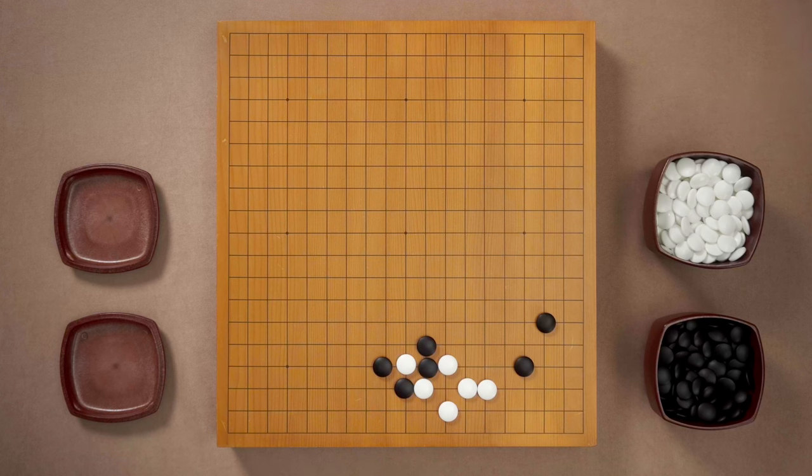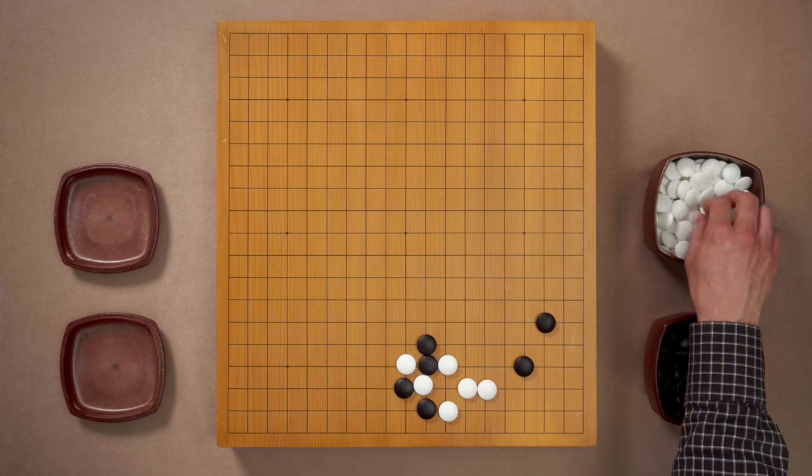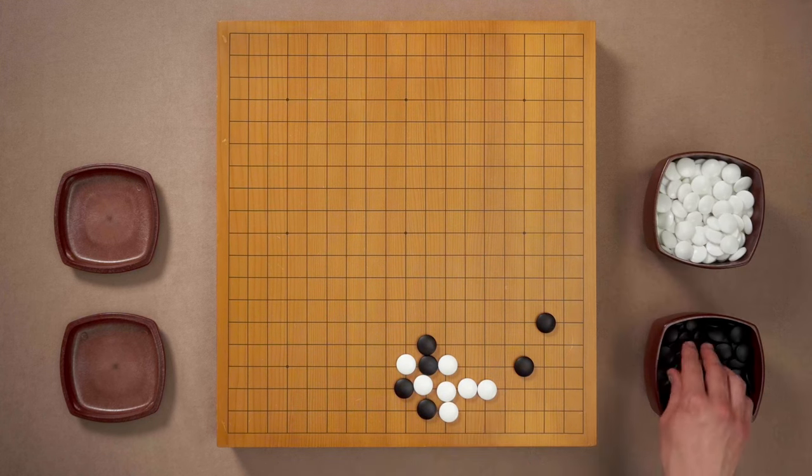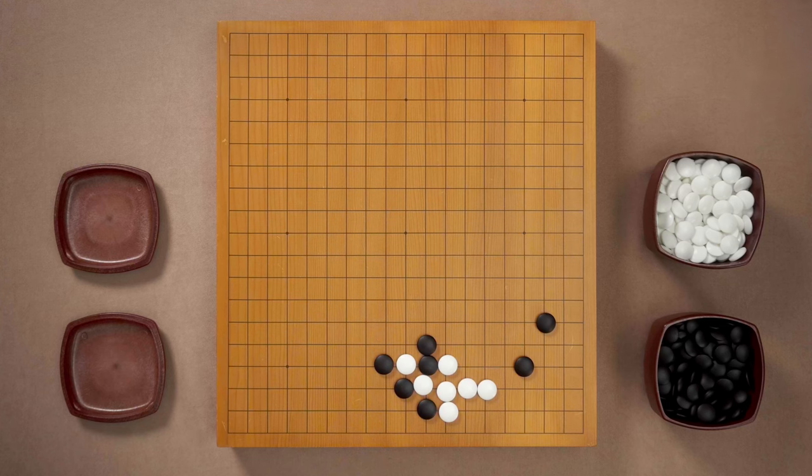However, black has a better option. Imagine what happens if black plays this atari. White might connect but then white's shape is pretty bad. These are two empty triangles and black can still capture white stone in a ladder. Your opponent will be very annoyed with your move.